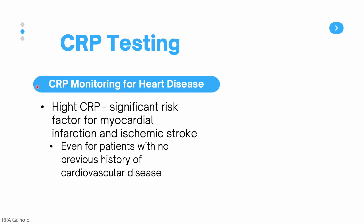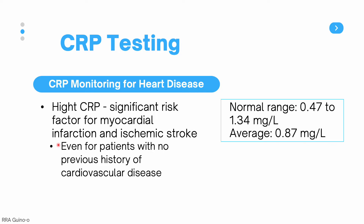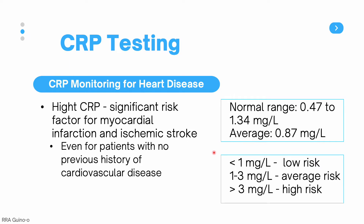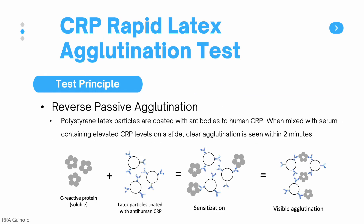In recent years, CRP is being used for monitoring heart disease. High CRP levels are a significant risk factor for myocardial infarctions and ischemic stroke, even for patients with no previous history of cardiovascular disease. The normal range of CRP for cardiac monitoring is 0.47 to 1.43 mg per liter, with an average of 0.87 mg per liter. Less than 1 mg per liter indicates low risk, 1 to 3 mg per liter is average risk, and greater than 3 mg per liter indicates high risk for cardiovascular disease.